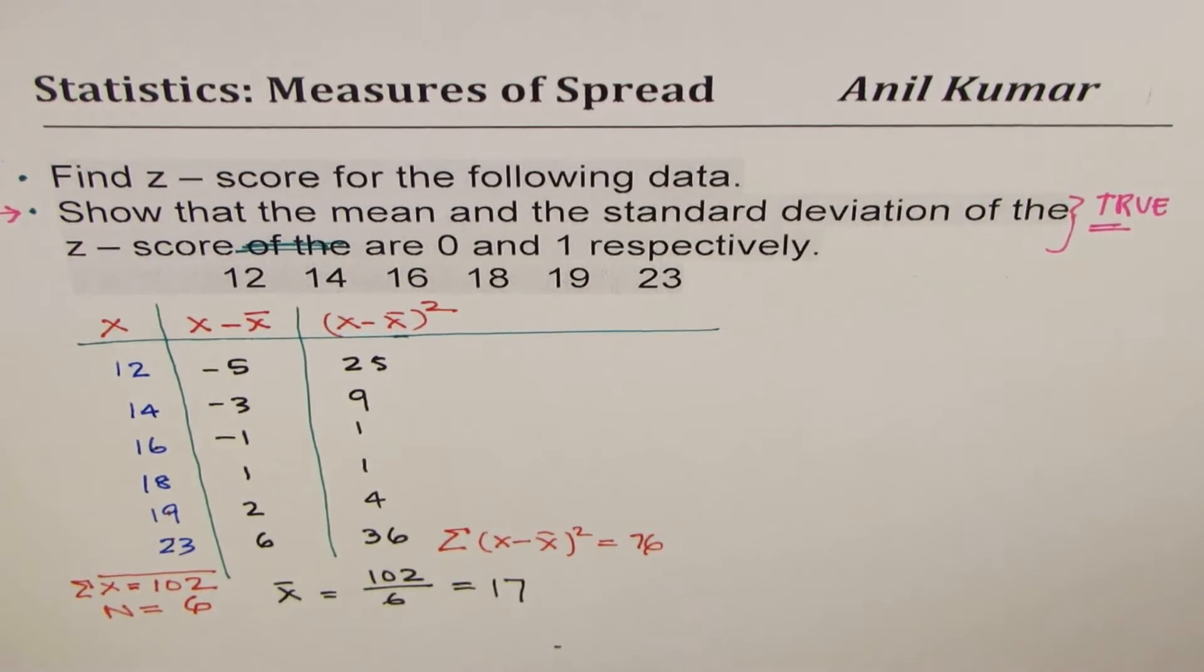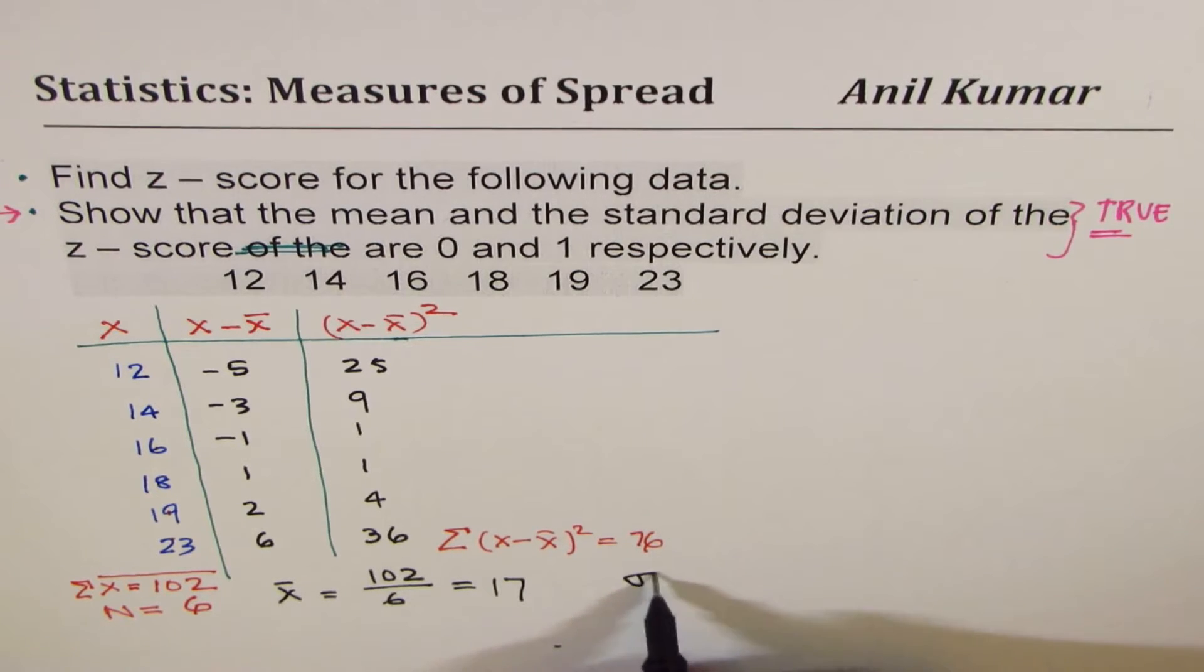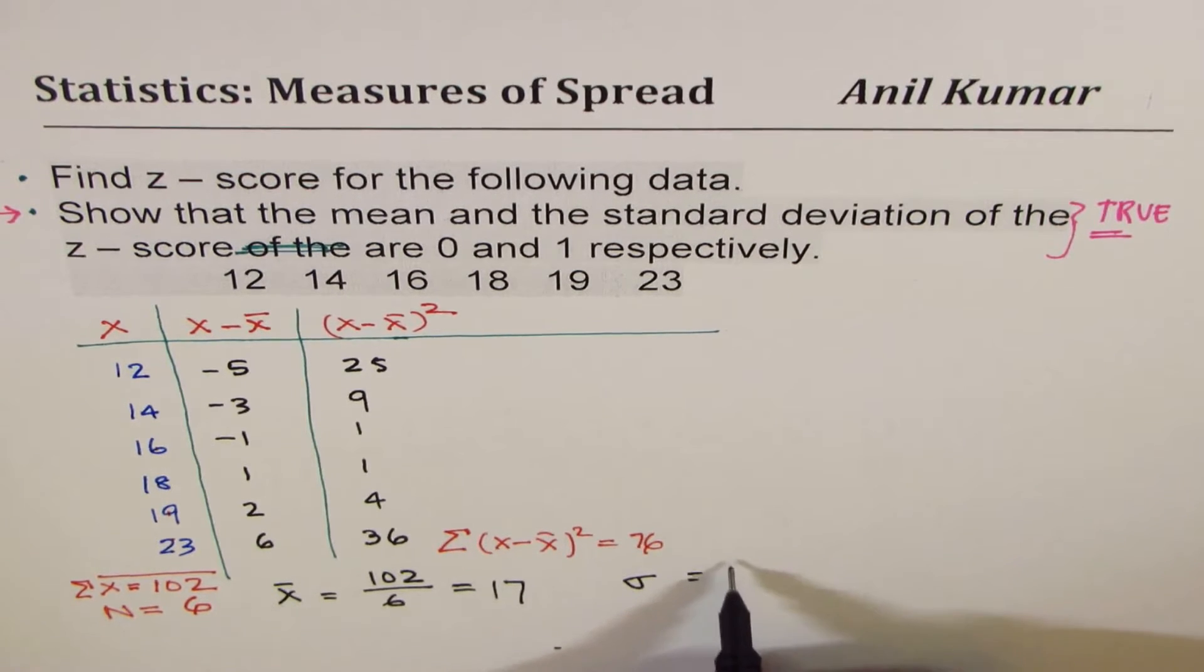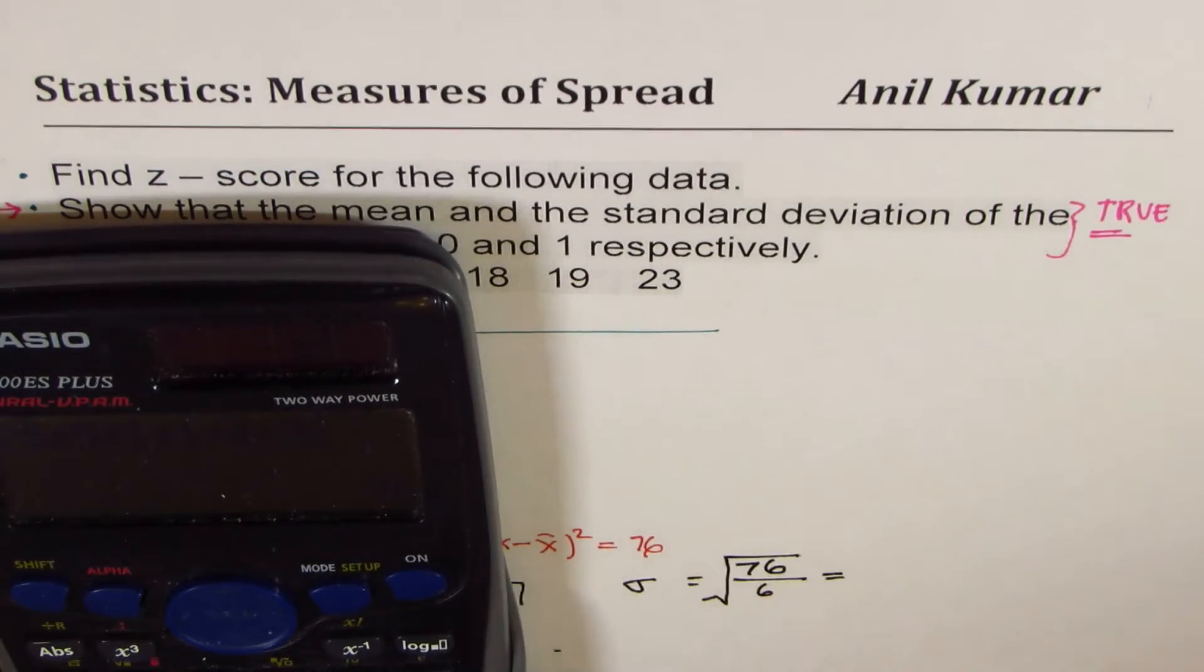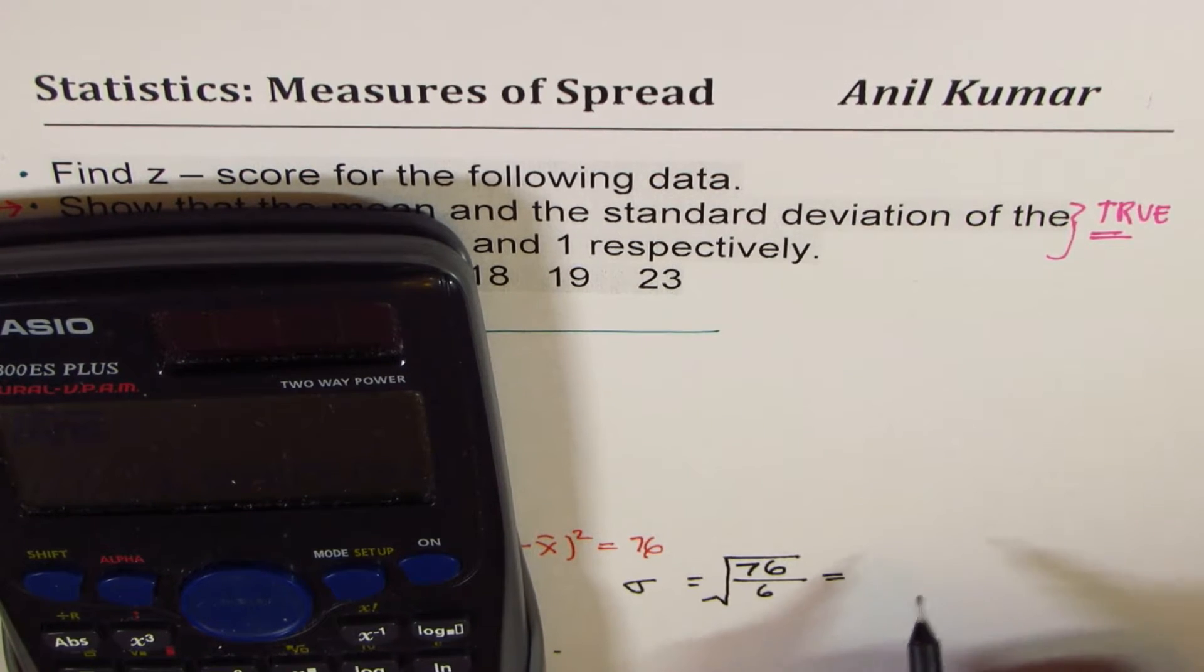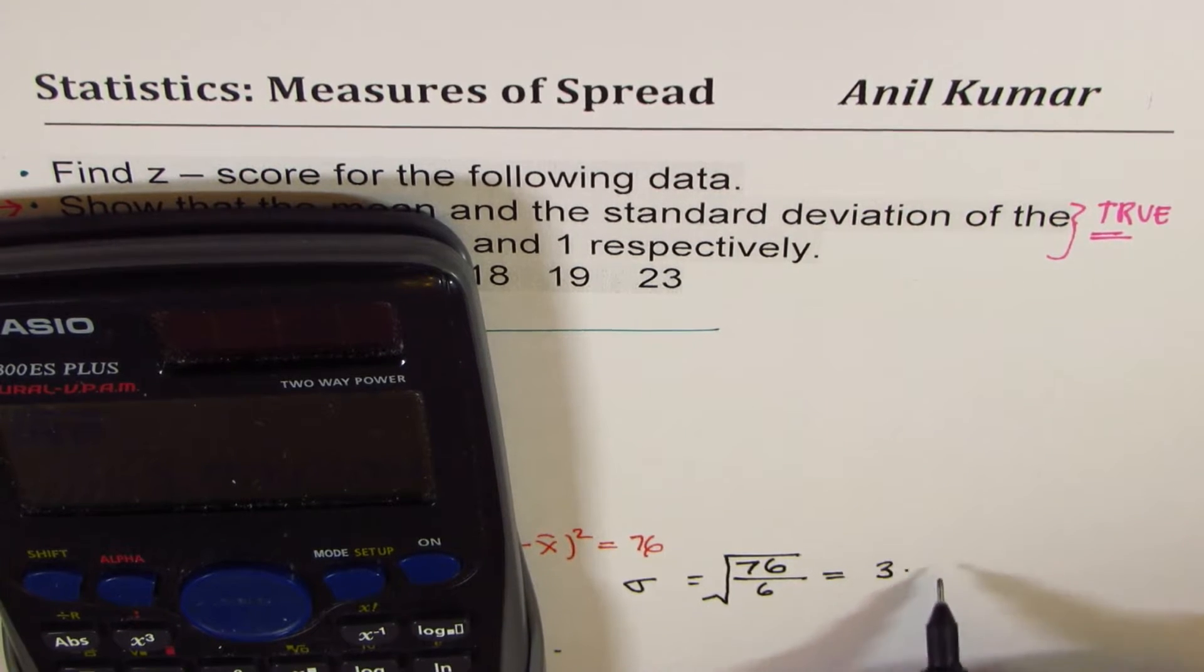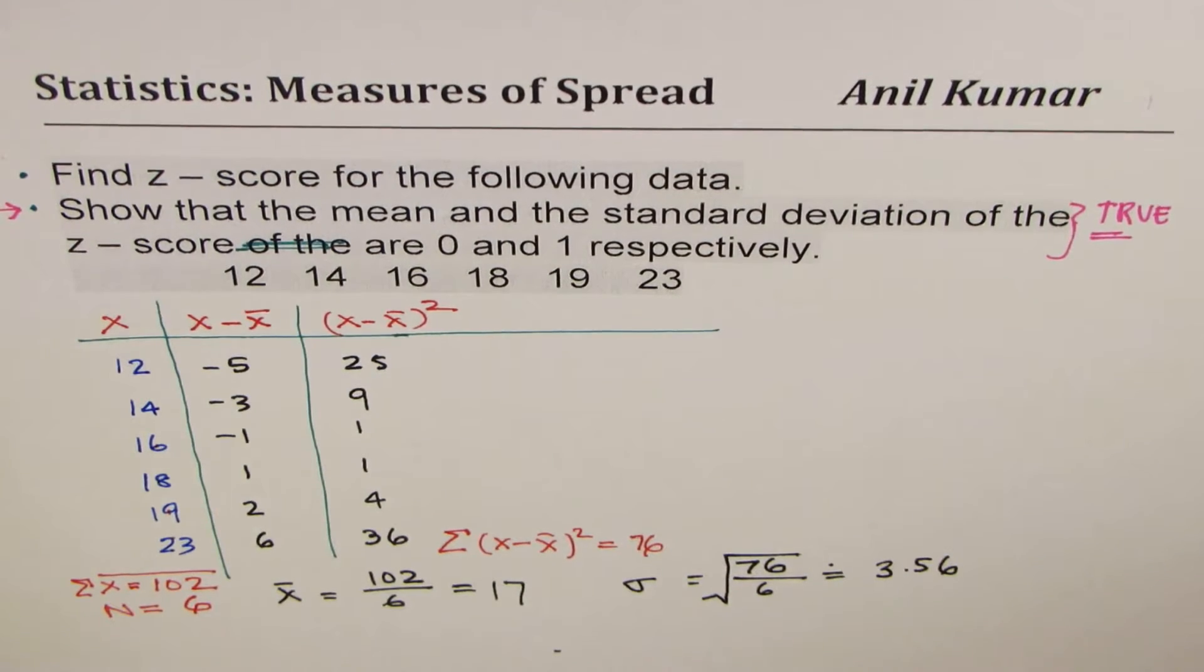So sigma of x minus x̄ whole square is 76. Now, that helps to find the standard deviation. So standard deviation, we are using this as a population, is equals to square root of that sum, which is 76, divided by n, which is 6. 76 divided by 6 and then we'll do square root of our answer, which in decimals is 3.559. So we'll do 3.56.